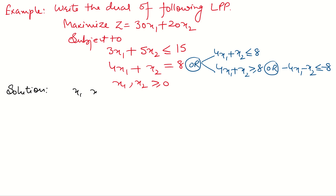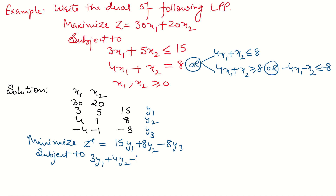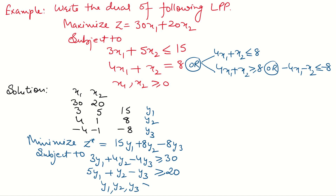To convert to the dual, first write down all the coefficients of the objective function and the constants. Now we have three equations, so we take three variables y1, y2, y3. To write the dual, read column wise. Minimize z* = 15y1 + 8y2 − 8y3, subject to the first column: 3y1 + 4y2 − 4y3 ≥ 30, second column: 5y1 + y2 − y3 ≥ 20, and y1, y2, y3 all positive.